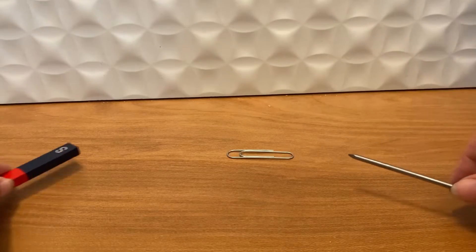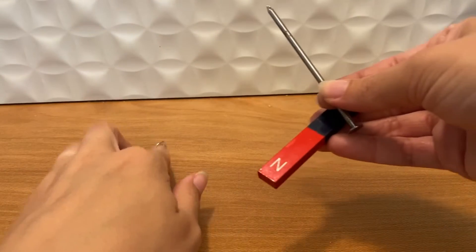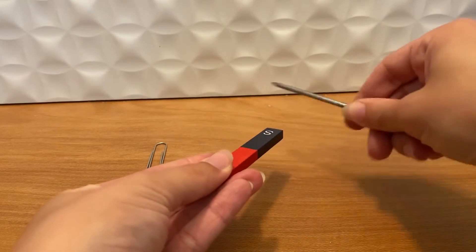Next we're going to move the nail 25 times in the same direction across one end of the magnet.